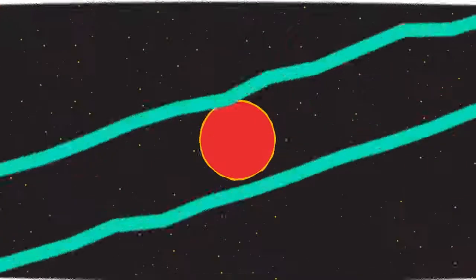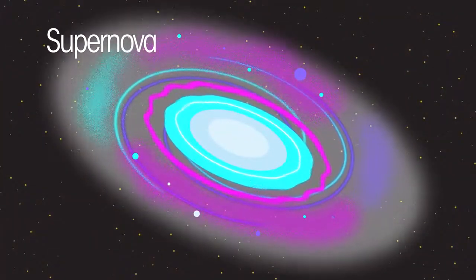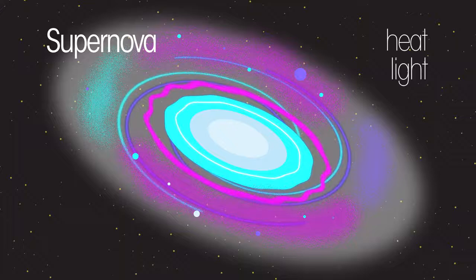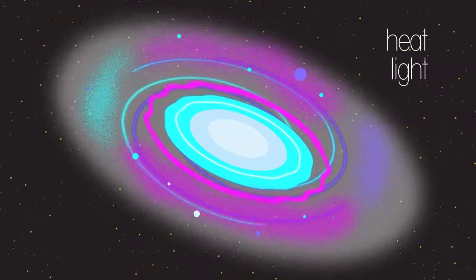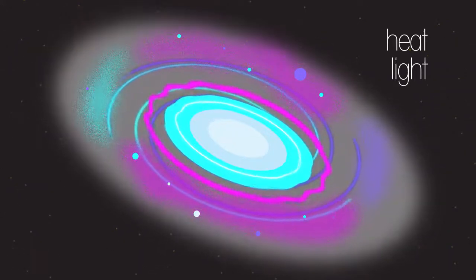This results in the collapse of the super red giant. The shockwave created triggers an explosion, a supernova, producing a lot of energy in the form of heat and light, which can outshine all the other stars in the galaxy for several weeks.